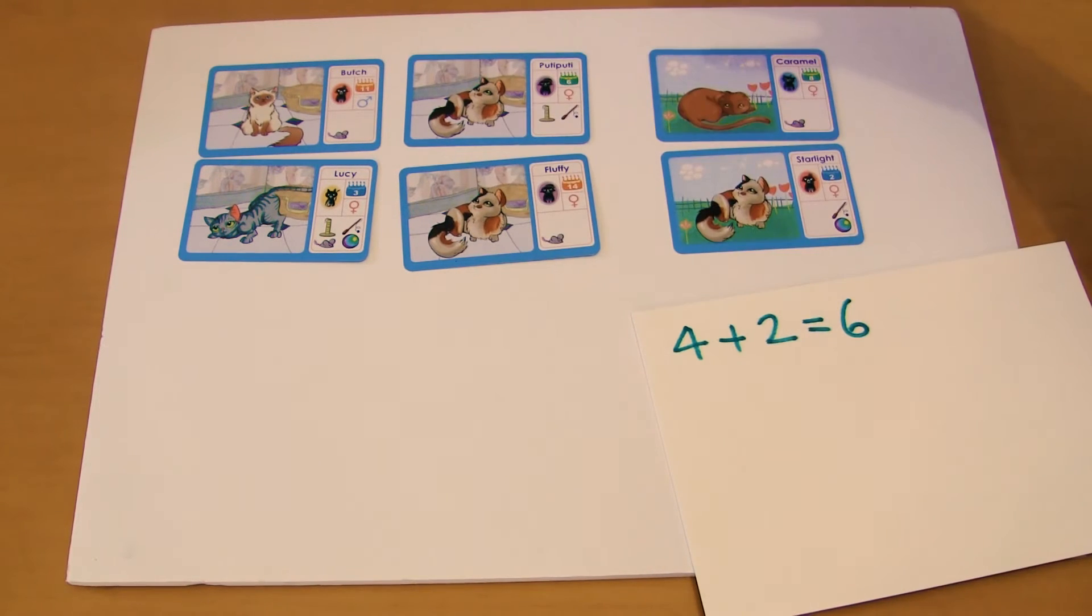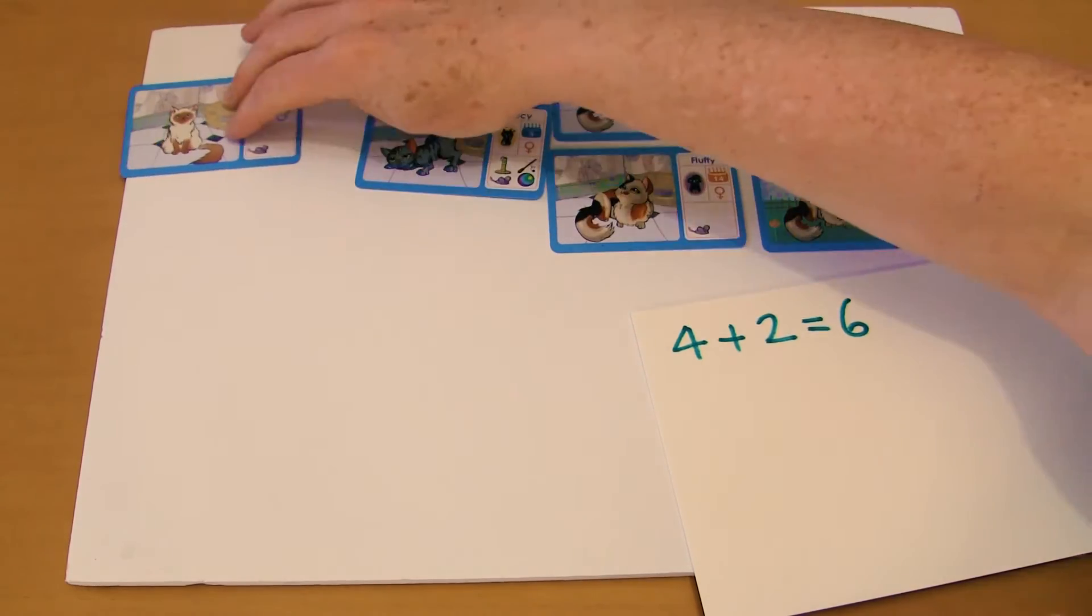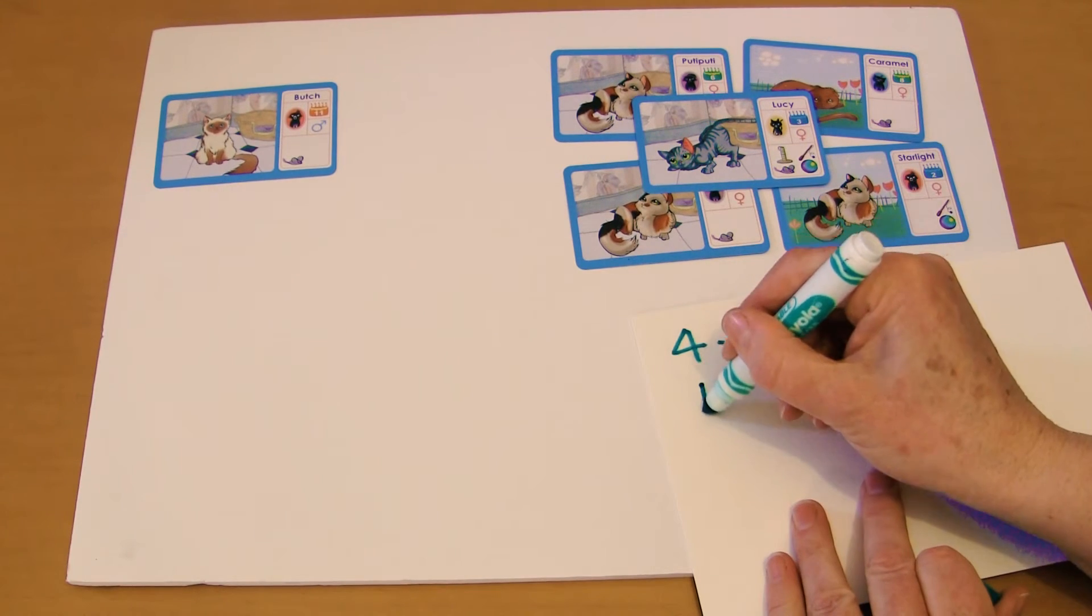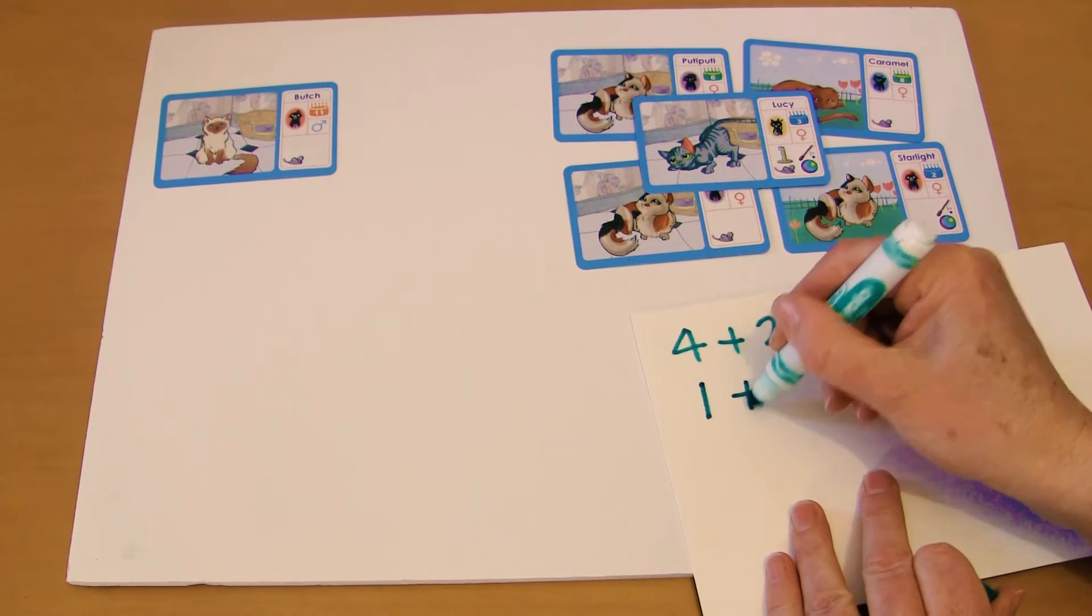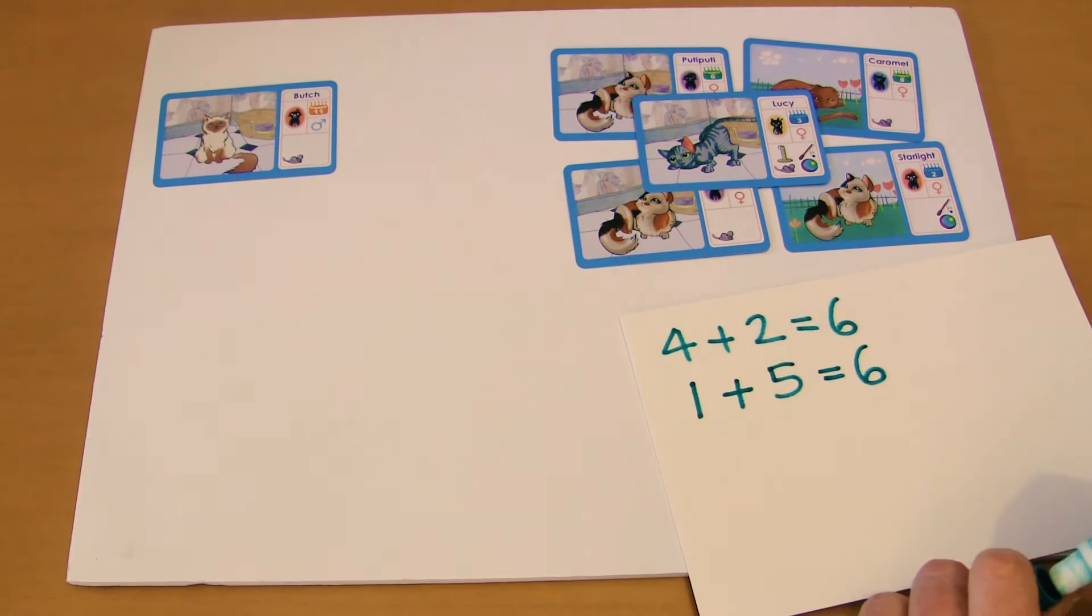Or we could look at the boys and the girls. And so we've got girl, girl, girl, girl, girl and boy. So in this case we've got one boy plus five girls equals six cats.